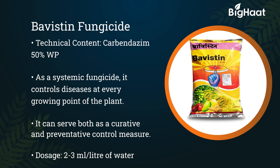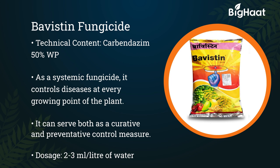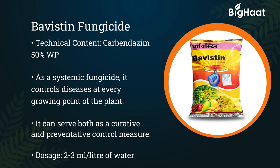Bovestin fungicide, with technical content Carbendazim 50% WP, is a systemic fungicide that controls diseases at every growing point of the plant. It can serve both as a curative and preventative control measure. Its dosage is 2 to 3 ml per liter of water.